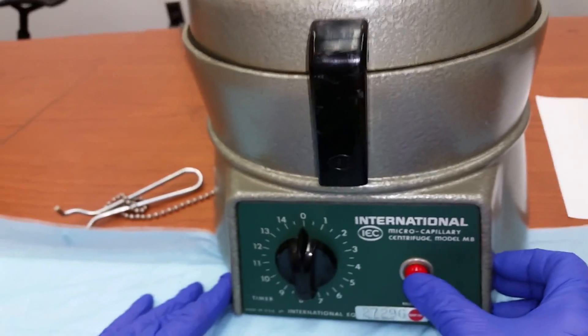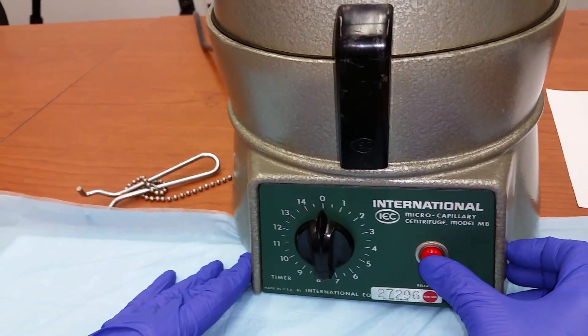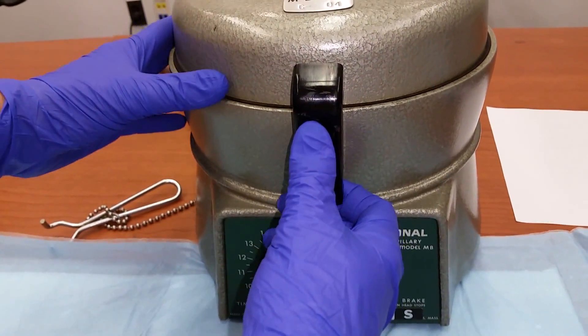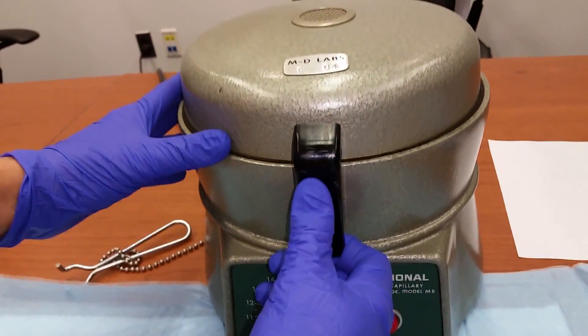You can use the brake to slow down the centrifuge when it's finished spinning. Unlock and open the centrifuge top when the centrifuge has stopped spinning.